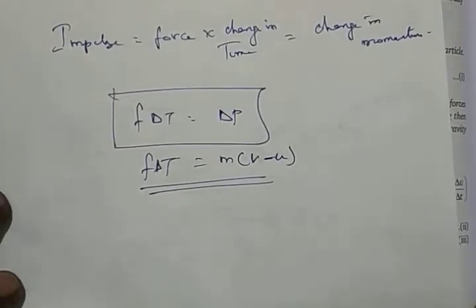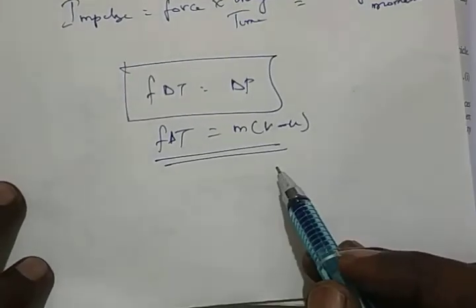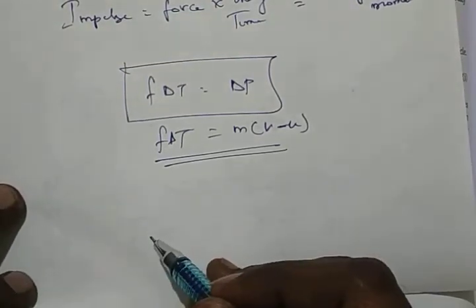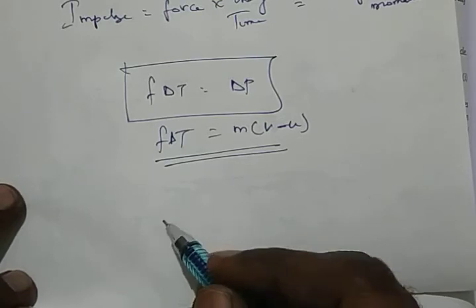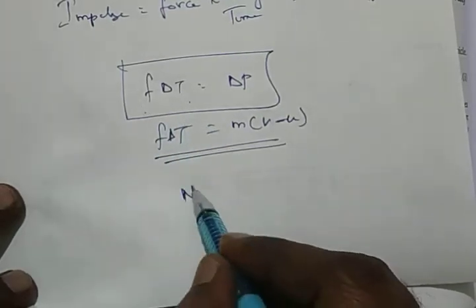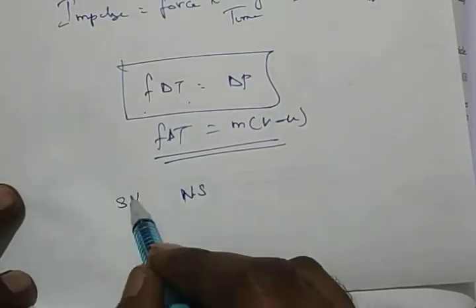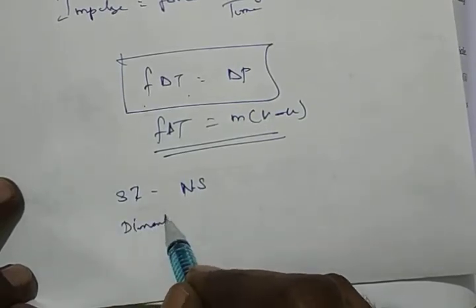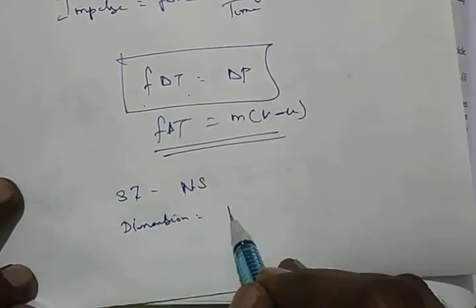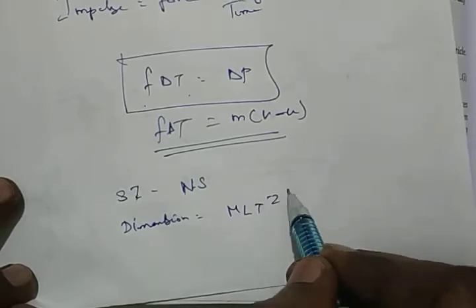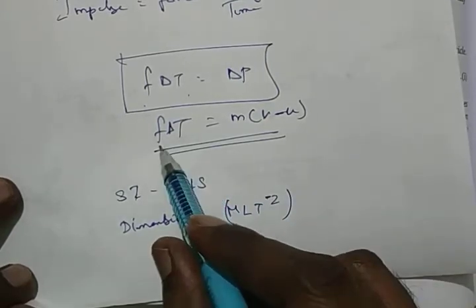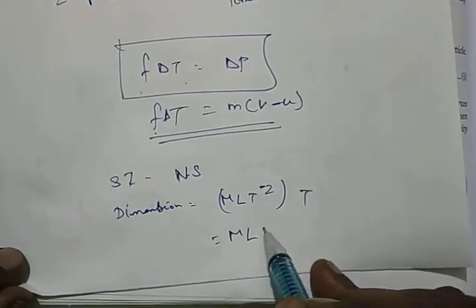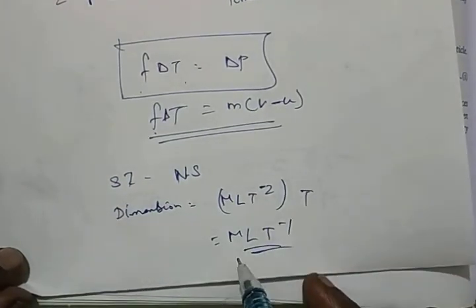Now, what is the SI unit of impulse? It is Newton-seconds — that is the SI unit. The dimension of impulse is MLT⁻² (force) multiplied by T (time), which gives MLT⁻¹ as the dimension.